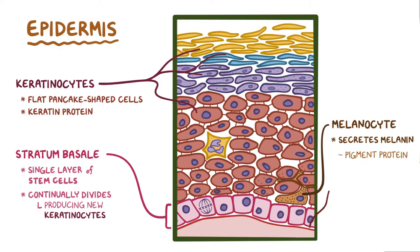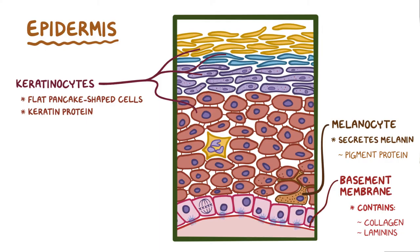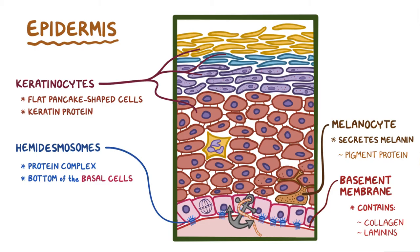Below the epidermis is the basement membrane, which is a thin layer of delicate tissue containing collagen, laminins, and other proteins. Basal cells are attached to the basement membrane by hemidesmosomes, a protein complex that stems from the bottom of the basal cells. Just like how an anchor digs into the seafloor and holds a boat in place, hemidesmosomes dig into the basement membrane and hold basal cells in place.